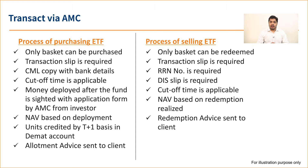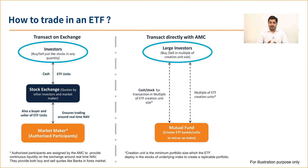The same applies in case of redemption directly with the AMC — you can only do it in the basket size. You have to fill in the application form, transfer the units into the AMC account, and as soon as the application form is received, the AMC will sell or extinguish the units by selling the underlying stocks representative of that basket. This is how you can transact directly with the AMC in case of ETF.